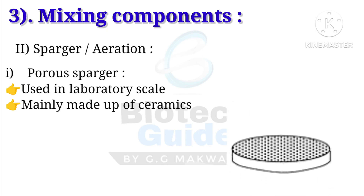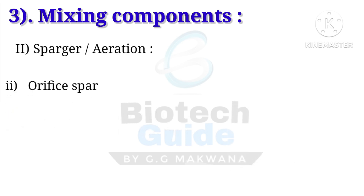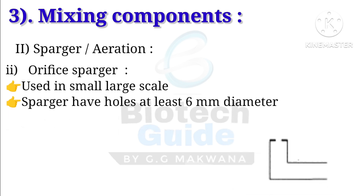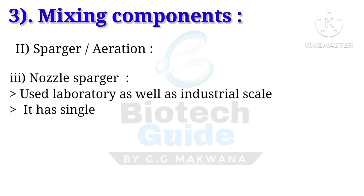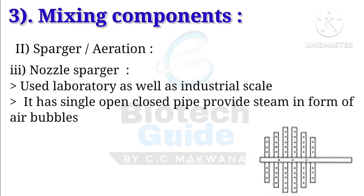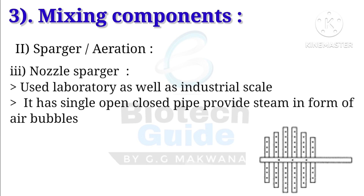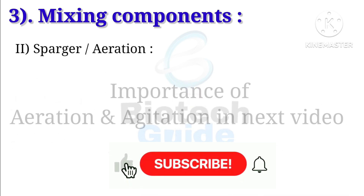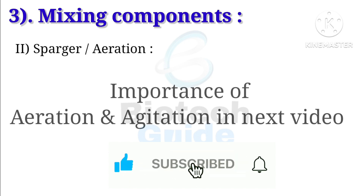Three types of spargers exist: the porous sparger, used in laboratory scale, made of ceramics; the orifice sparger, used in small or large scale, with holes at least 6 millimeters in diameter; and the nozzle sparger, used in laboratory as well as industrial scale, which has a single open pipe that provides steam in the form of air bubbles. All three diagrams can be seen here.